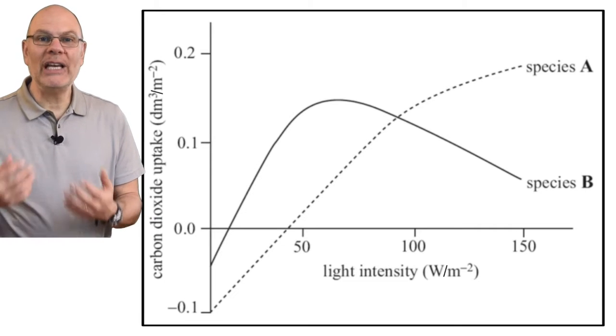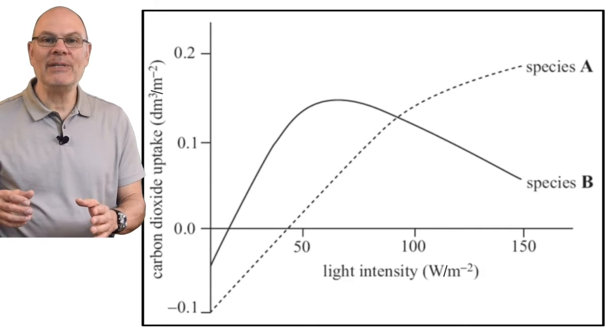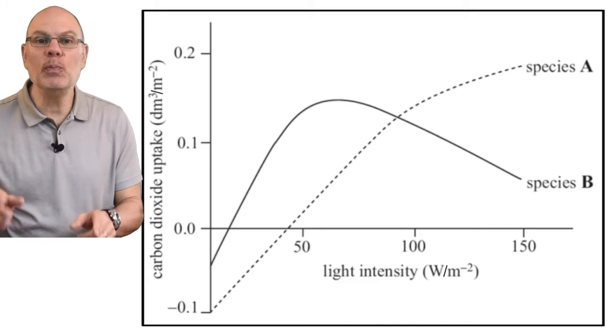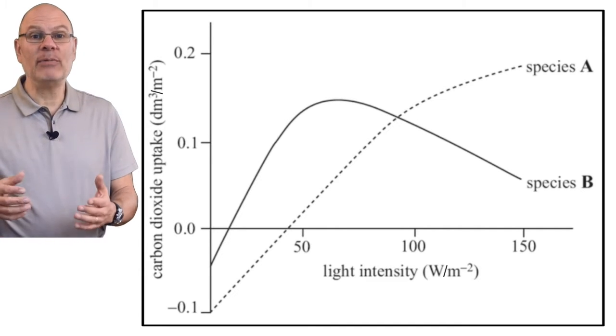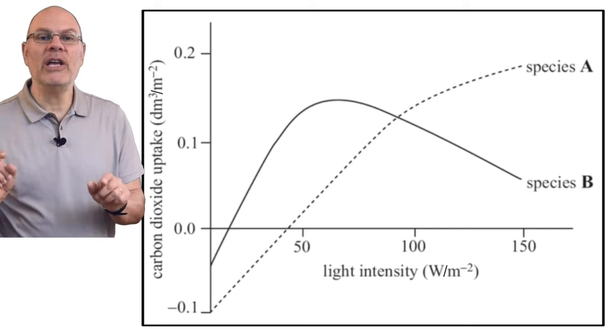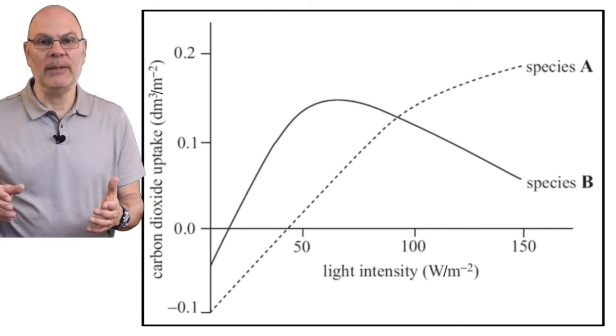The graph below shows the relationship between carbon dioxide uptake and light intensity in two plant species, A and B. One of these species is adapted to living in full sun, while the other is adapted to living in the shade.